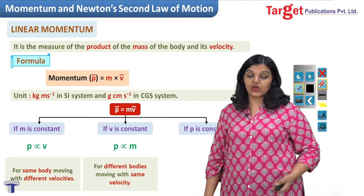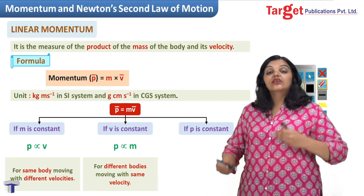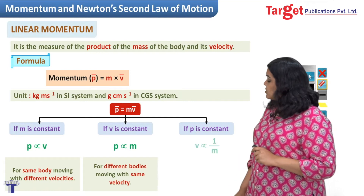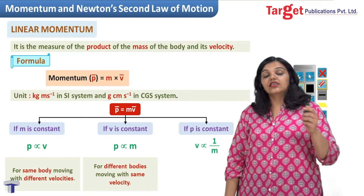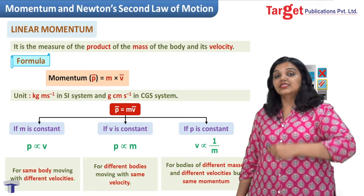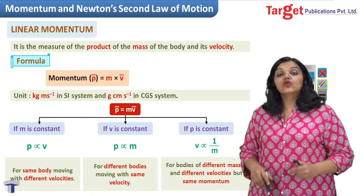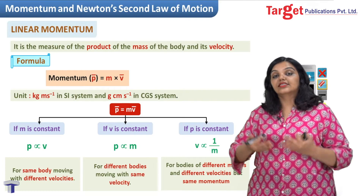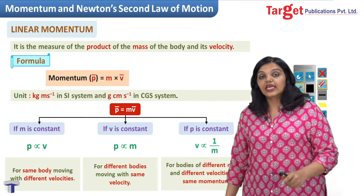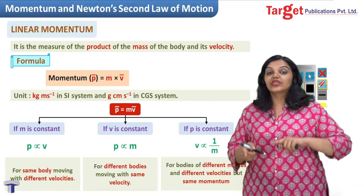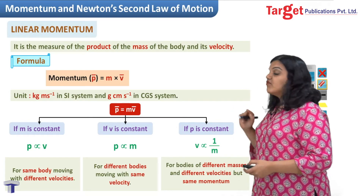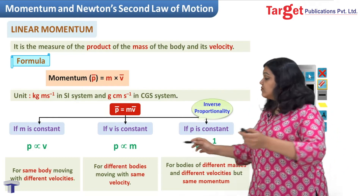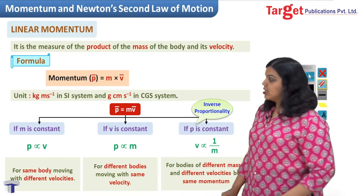Case 3: suppose the total momentum is constant — not mass, not velocity individually, but the product mv is constant. In this case, v and m turn out to be inversely proportional. For example, a 2 kg body at 3 m/s and a 3 kg body at 2 m/s both have the same momentum. The one with greater mass has lesser velocity and vice versa. So: direct proportionality when m is constant, direct proportionality when v is constant, but inverse proportionality when p is constant.